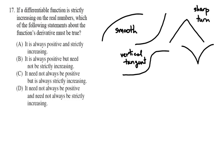A curve could still look smooth if there's a vertical tangent, but we don't consider that to be a differentiable point because the slope of a vertical line is undefined. And a derivative is just the slope of a line at a particular point. So smooth curves are differentiable; curves with sharp turns or vertical tangents are not — assuming the curve is continuous as well.